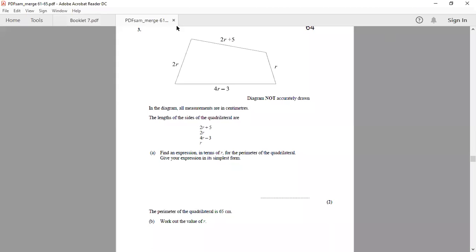Right, let's move to this question here. It says, in the diagram, all measurements are in centimeters. The lengths of the sides of the quadrilateral are 2R plus 5, 2R, 4R minus 3. And if I add all of these up...